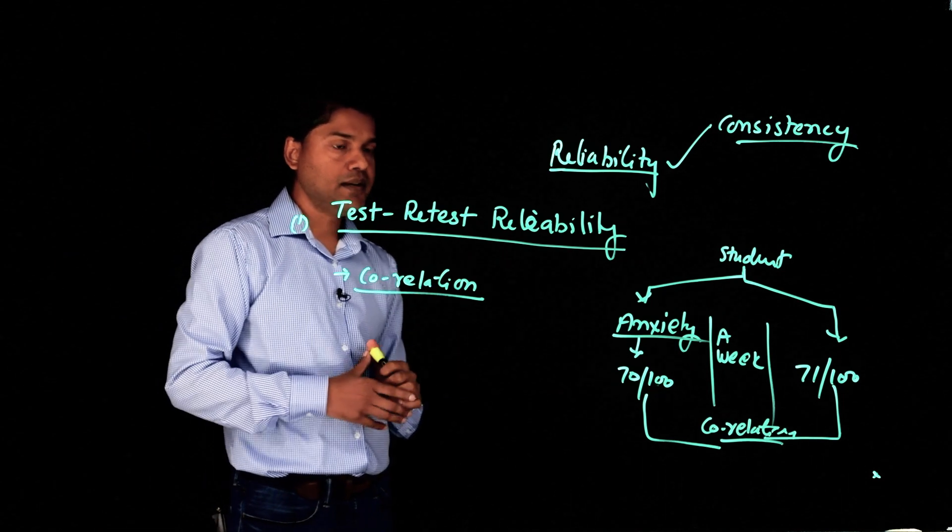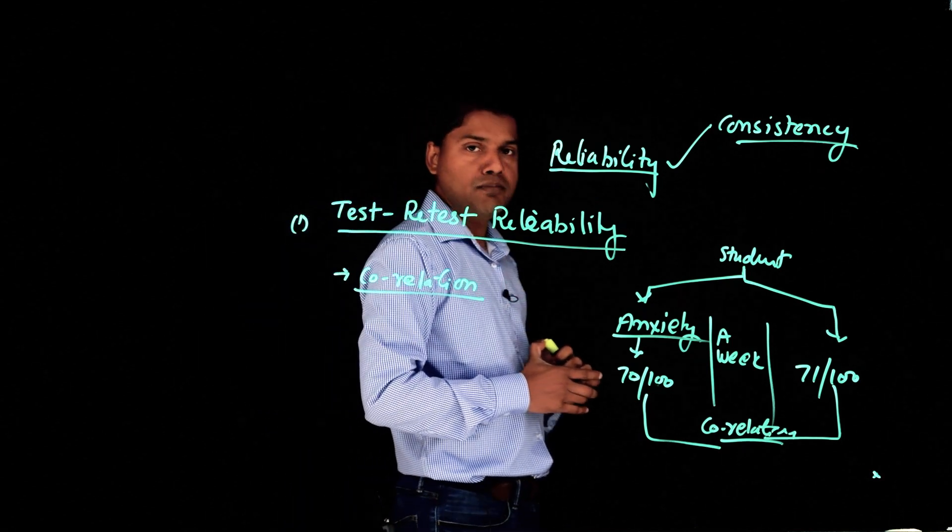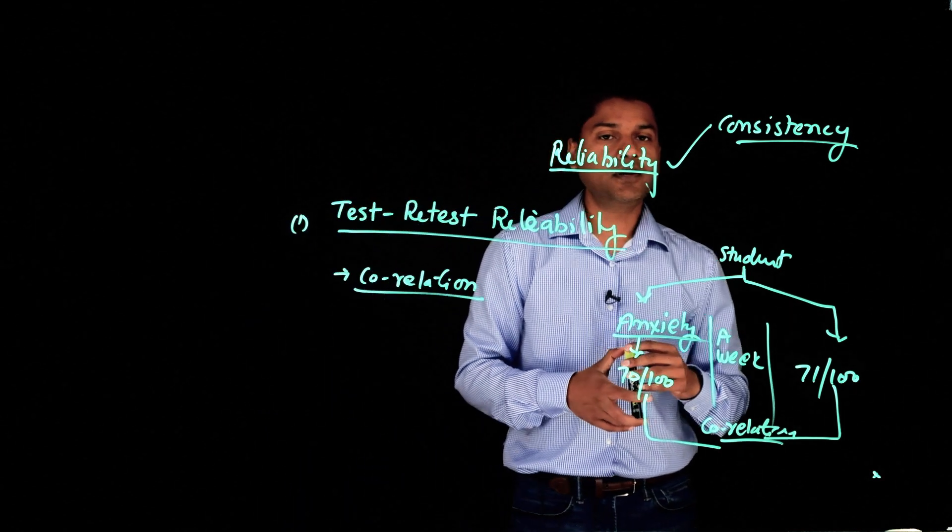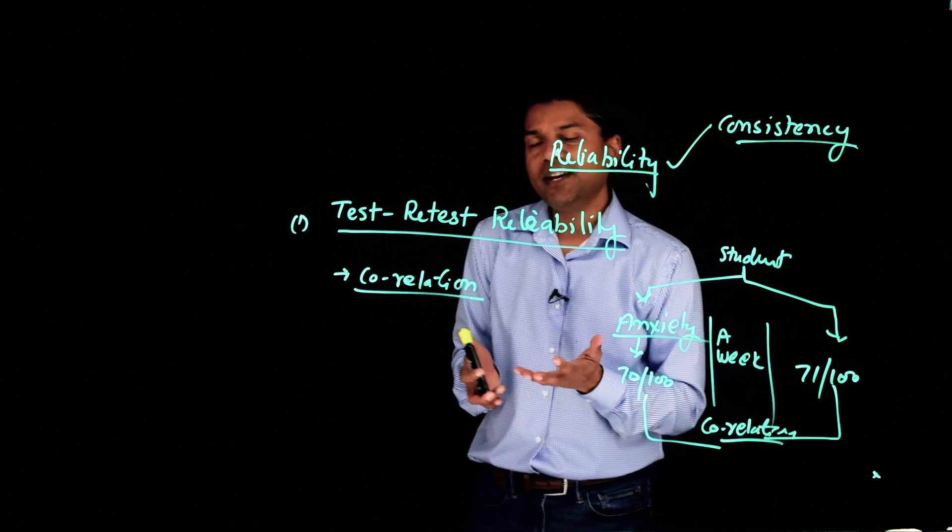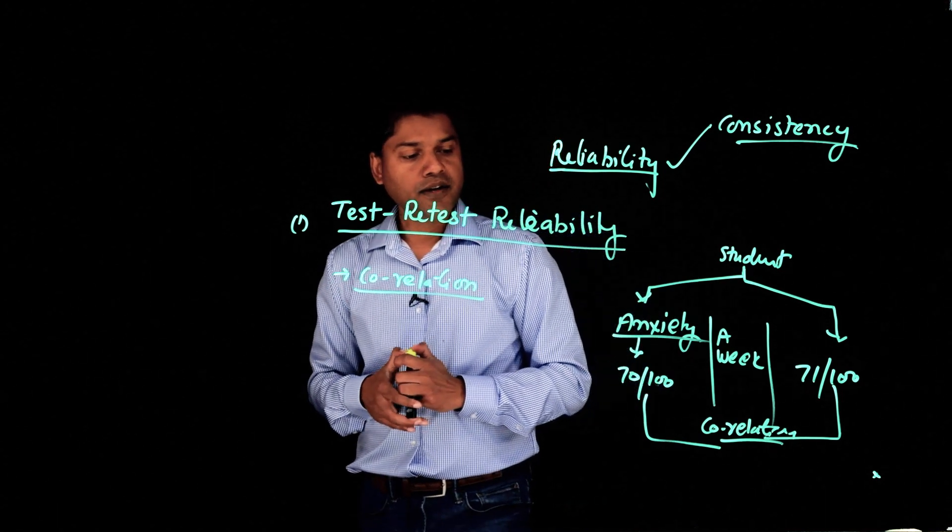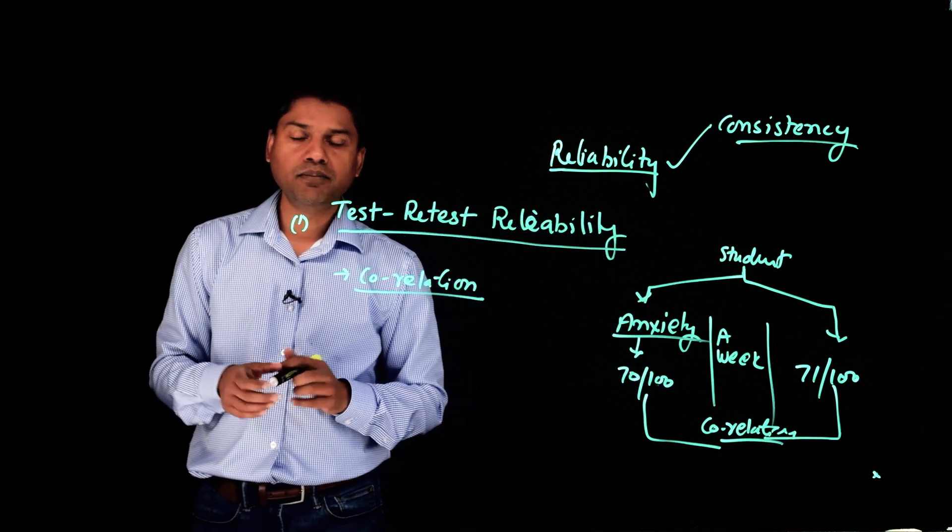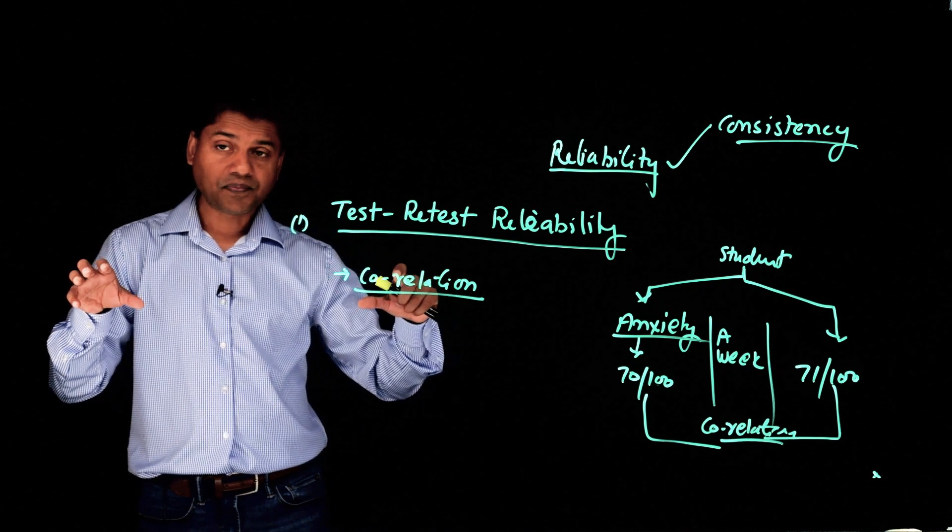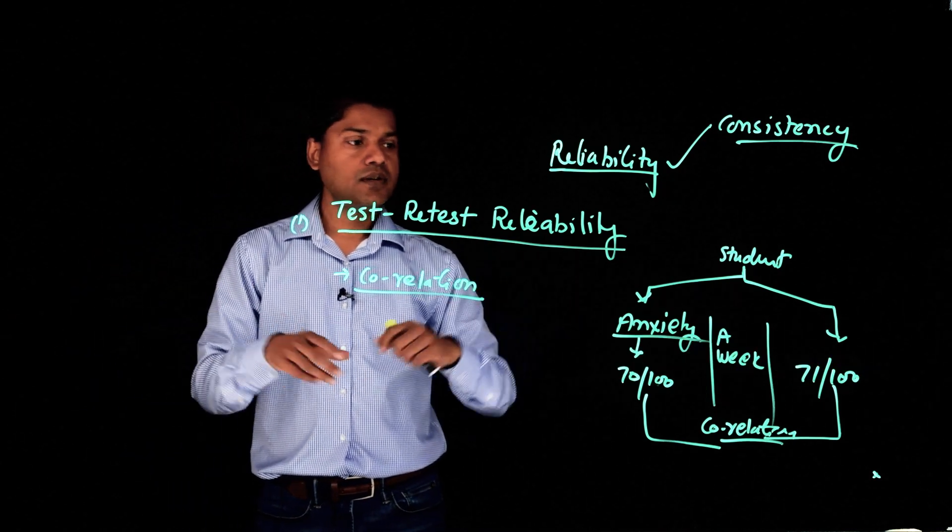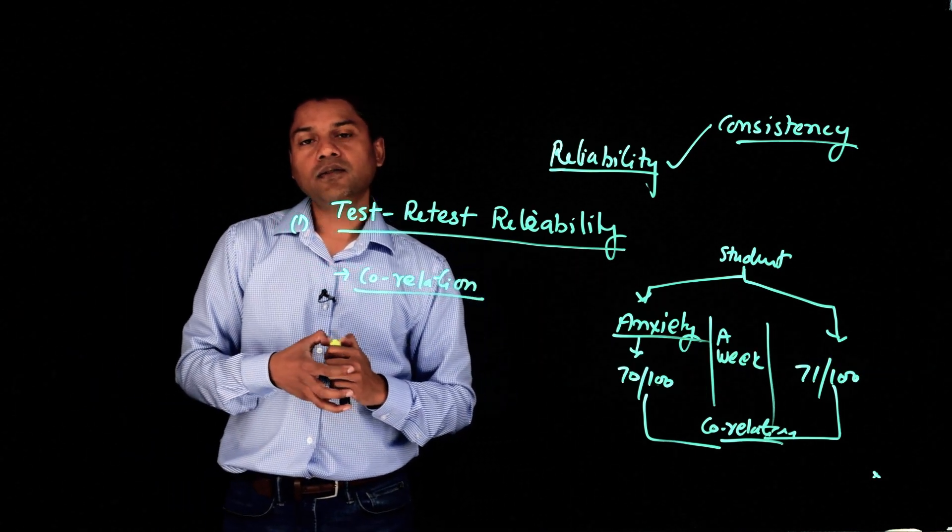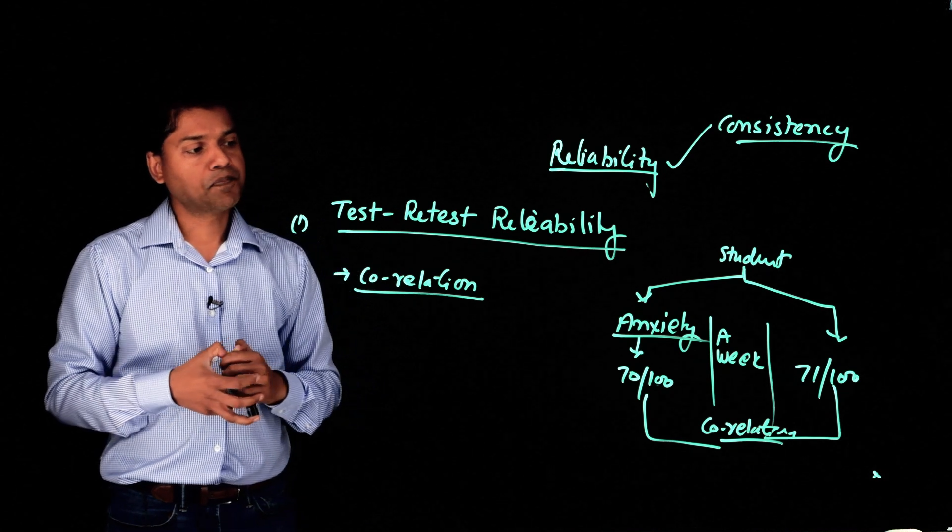So in simple words, test-retest reliability is a way to measure reliability of an instrument that measures any construct. And the higher the correlation between the test after certain intervals, the higher the reliability. The lower the correlation, the lower reliability.